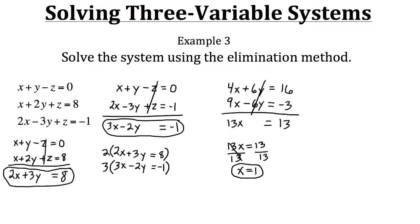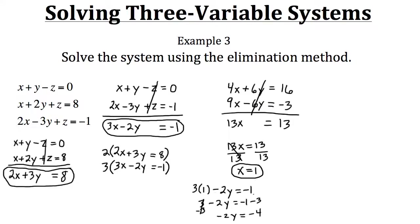We find our y value by plugging x equals one into the equation three x minus two y equals negative one. Three times one is three, minus two y equals negative one. Subtracting three from both sides: negative two y equals negative four. Dividing both sides by negative two, y equals negative four divided by negative two, which gives us positive two.